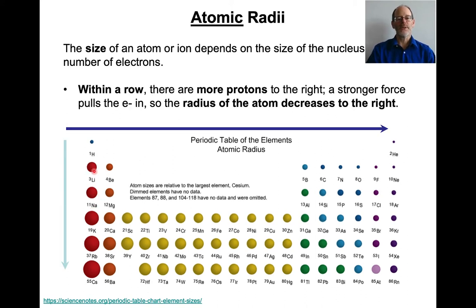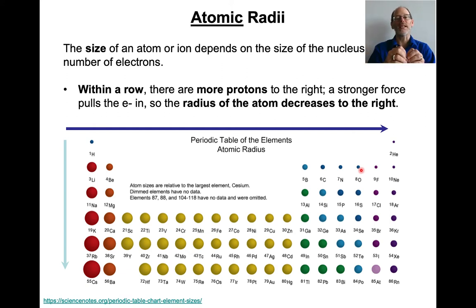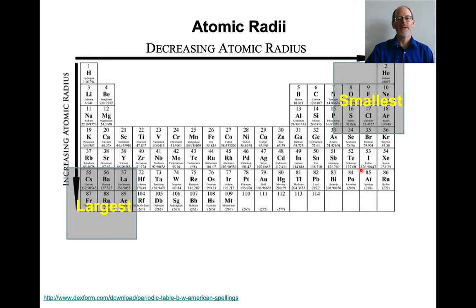As you go across a row, the atomic radius gets smaller and smaller. As the atomic number increases going to the right, you're increasing the number of protons in the nucleus. The more protons you have, the stronger they pull in the electrons, and the smaller the atomic radius. So the smallest radii are in the upper right-hand corner and the largest are in the lower left-hand corner.